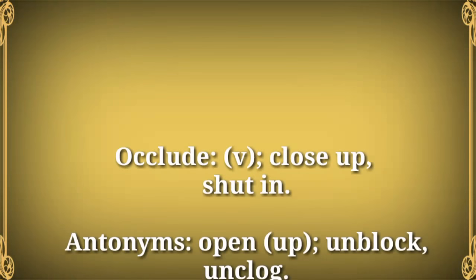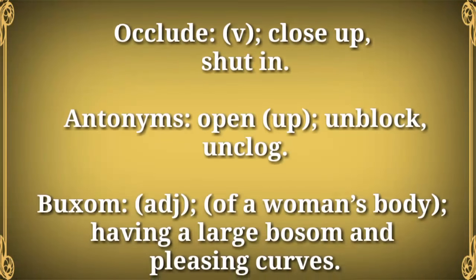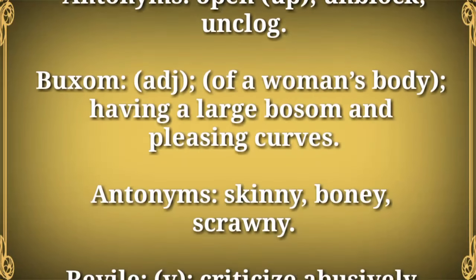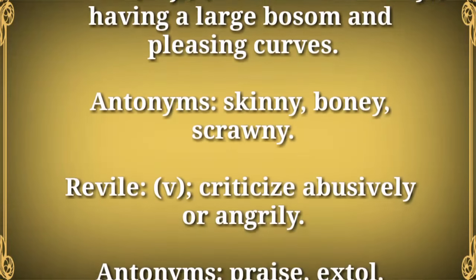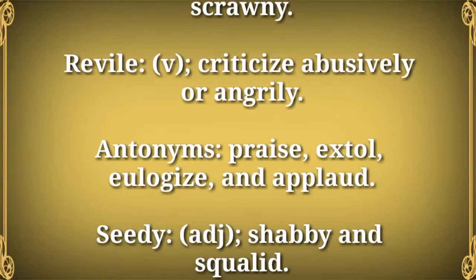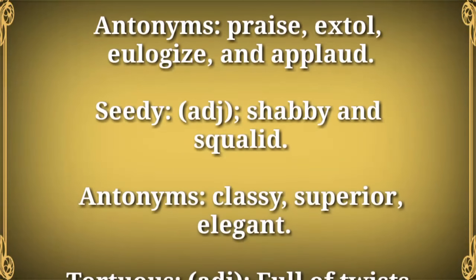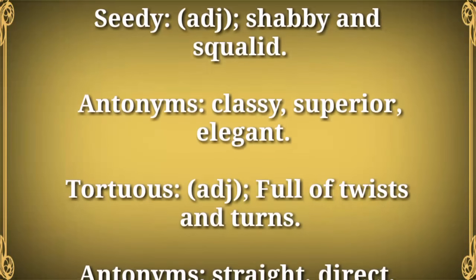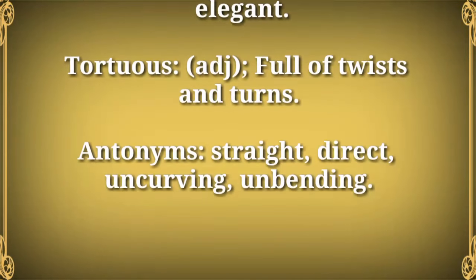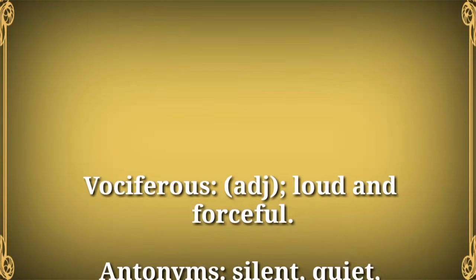Dastard (n) — a dishonorable or despicable man. Antonyms: cad, craven, poltroon, recreant. Occlude (v) — close up, shut in. Antonyms: open up, unblock, unclog. Buxom (adj) — of a woman's body: having a large bosom and pleasing curves. Antonyms: skinny, bony, scrawny. Revile (v) — criticize abusively or angrily. Antonyms: praise, extol, eulogize, and applaud. Seedy (adj) — shabby and squalid. Antonyms: classy, superior, elegant.